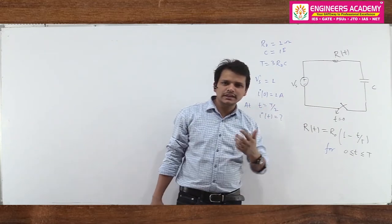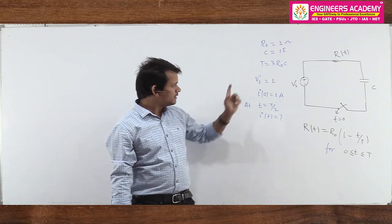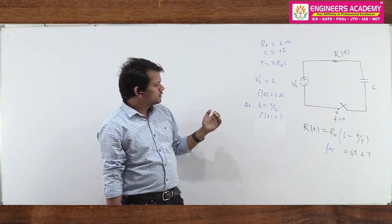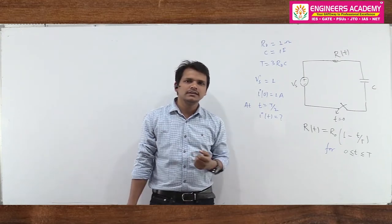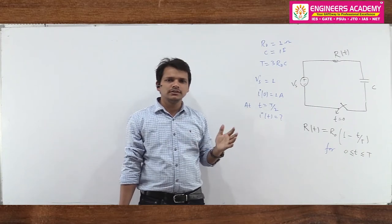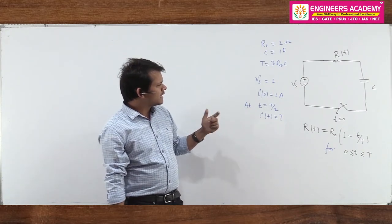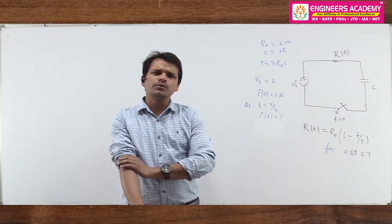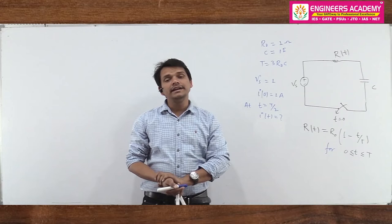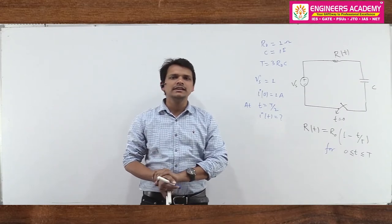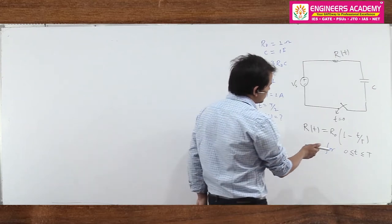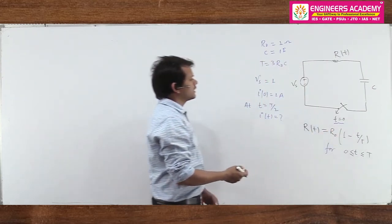We can't use a shortcut here. It is a first-order circuit, but the problem is that R(t) is time-dependent. So the best way to solve this circuit is using a differential equation. KVL and KCL exist at every time instant, meaning at any time T the circuit relationships hold.